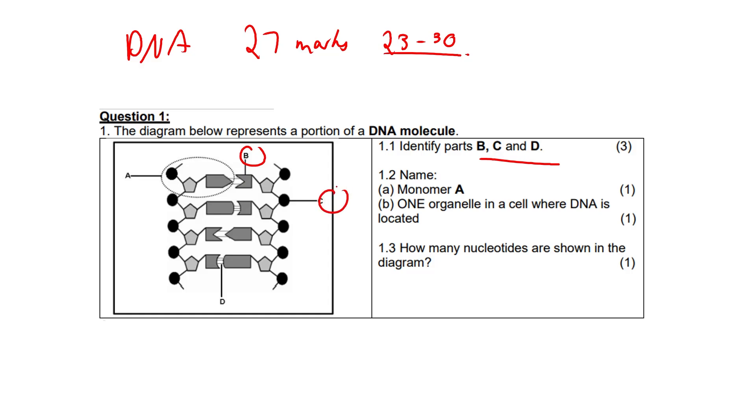Part C represents a phosphate group, which together with deoxyribose forms the sugar phosphate backbone of the DNA strand. D represents a hydrogen bond connecting the nitrogen bases from the two complementary strands of DNA.